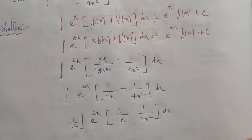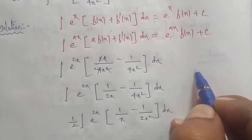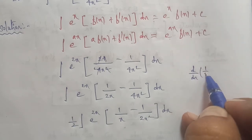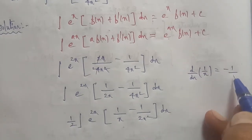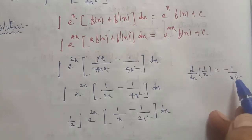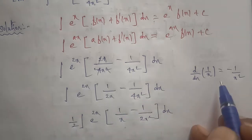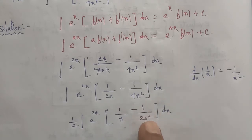Next step: we apply the formula. In the result, we use the fact that the differentiation of 1 by x is minus 1 by x square. So 1 by x differentiated gives minus 1 by x square, which matches 1 by 2x square.